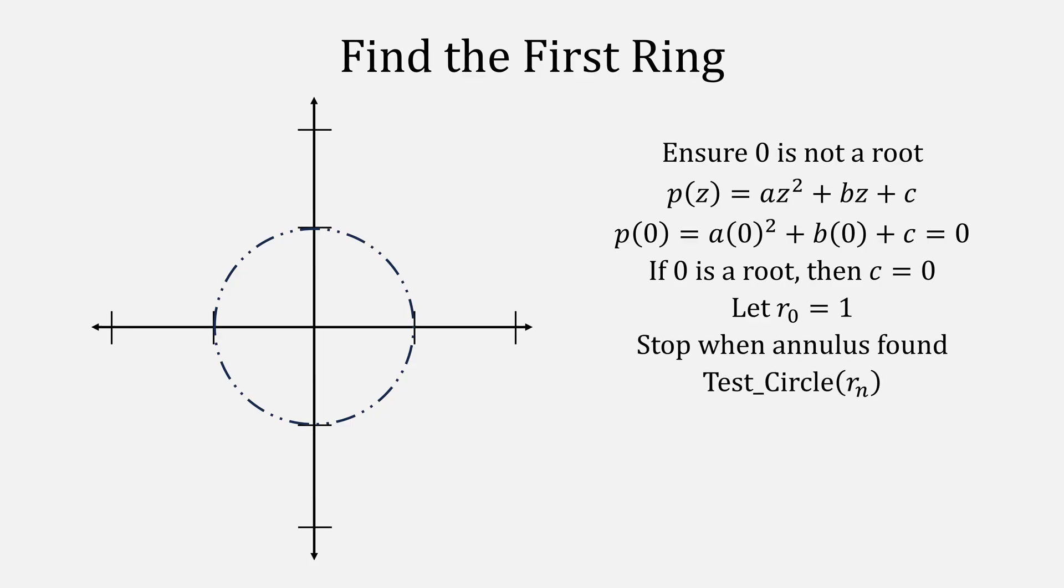Otherwise, start with a radius of one and stop once you find an annulus. Each time you do a test with this radius, if it passes, you'll divide the radius by two. And if it fails, you'll multiply by two and restart.